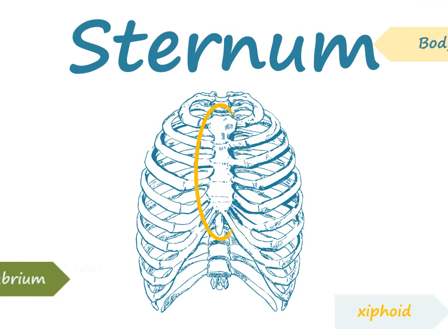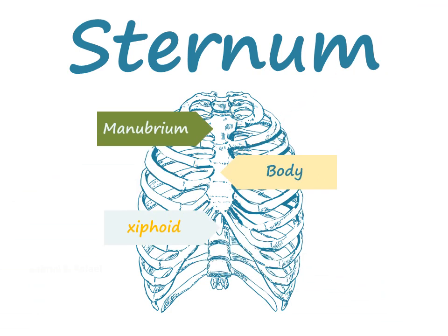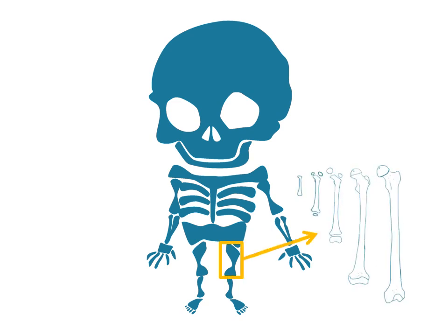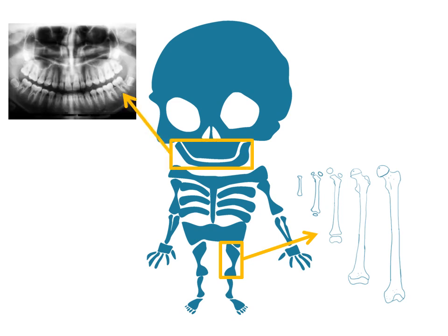The sternum is composed of three elements: the manubrium, the body, and the xiphoid process. Estimating how old a juvenile individual was at the time of death is based on two aspects of the growth process: bone size and skeletal development, and dental development. In this video, I will focus on the development of the body of the sternum.